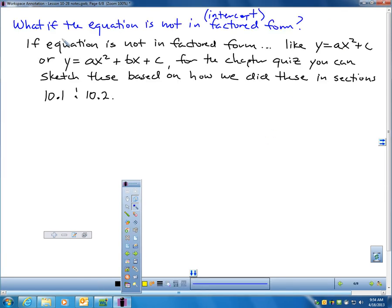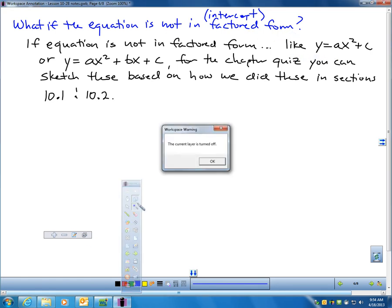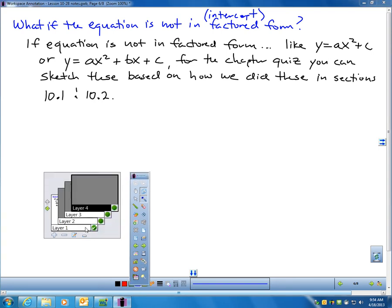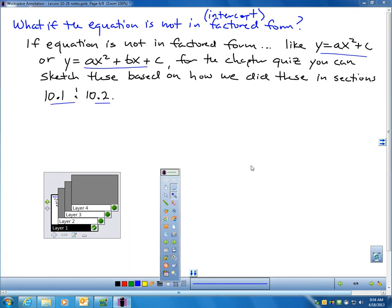What if the equation is not in intercept form, or it's not already prefactored? If it was not in intercept form, we worked on standard form equations in 10.1 and 10.2. If it's not in intercept form, you could graph them the way we did in 10.1 and 10.2. You could just do it the way you learned prior. You don't have to put it in factored form. You could just do what you did in 10.1 or 10.2.